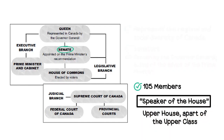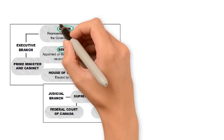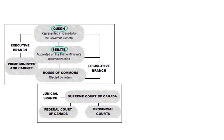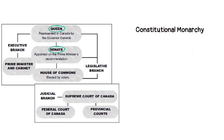The third branch is represented by the Queen, and/or by the Governor-General that they elect, based on the Prime Minister's advice. In Canada's government, having royalty that also has to follow a constitution is defined as having a constitutional monarchy.